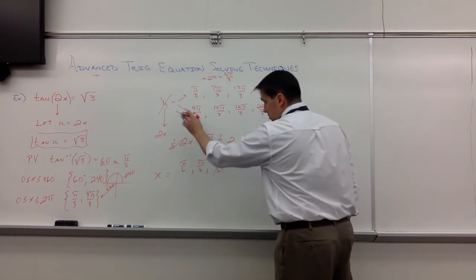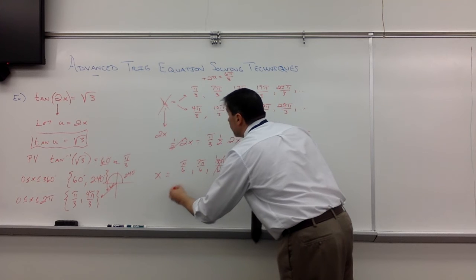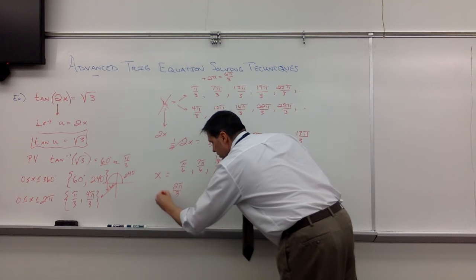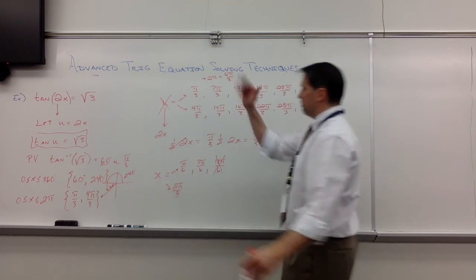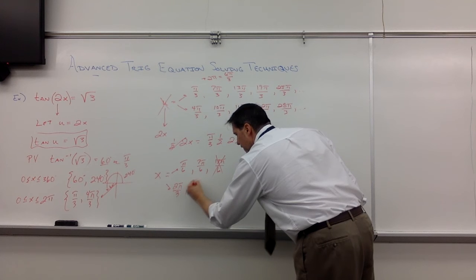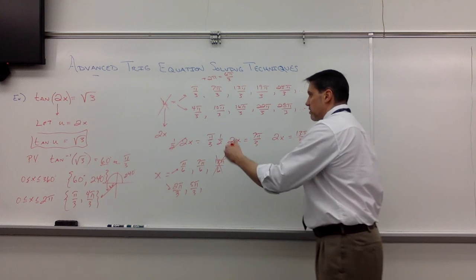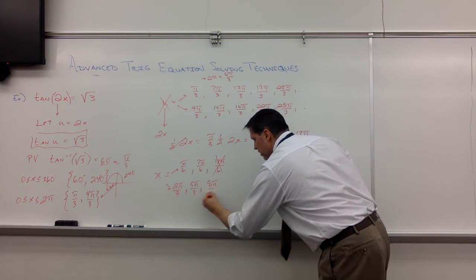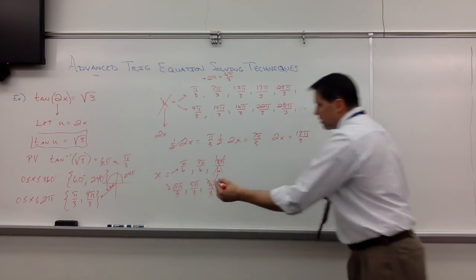Okay, 4π thirds, again, times 1 half would be 4π/6. Now, in this case, 4π/6, we would put that in lowest terms as 2π thirds. Maybe I should be writing that. Eh, 4π/6. Over here, this would be 10π/6, which is 5π thirds. 16π/6, which is 8π thirds. But, again, you see 3 goes into 8, 2, and 2 thirds times. So, sorry, too far.